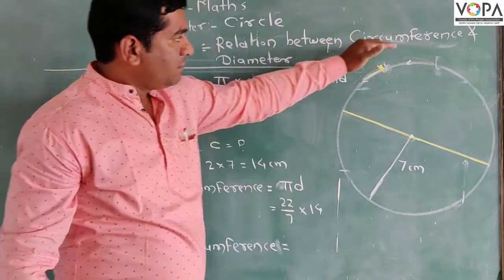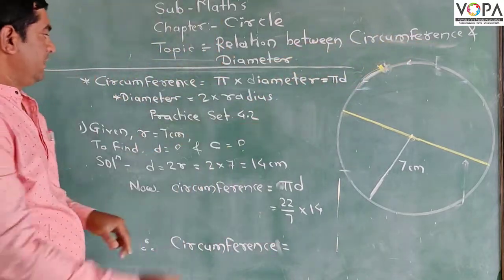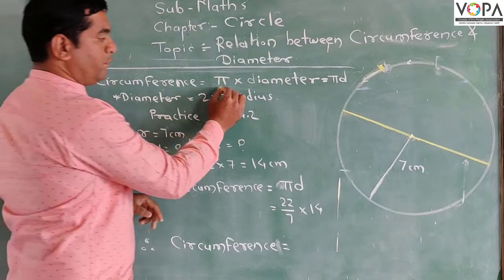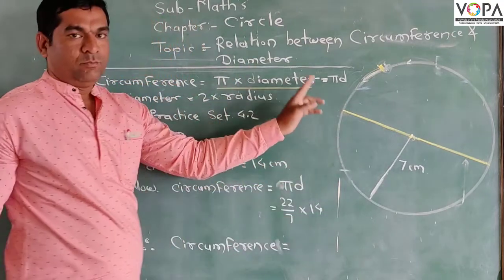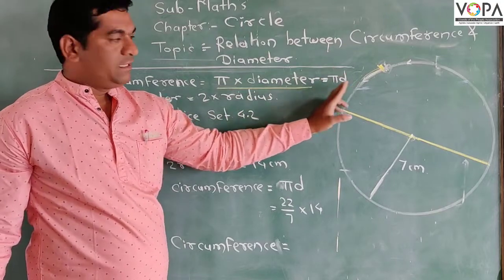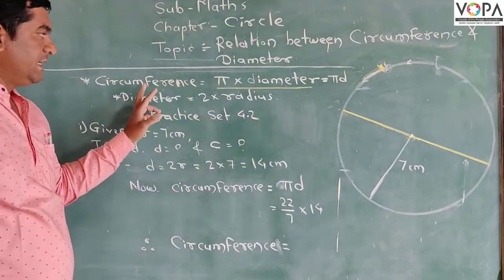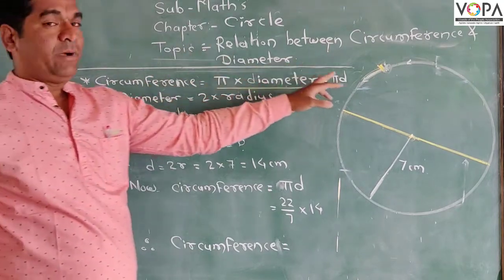The relation between circumference and diameter is: circumference is equal to π into diameter. If diameter is equal to D, then circumference is equal to πD.